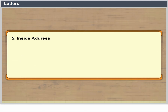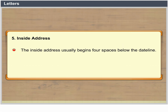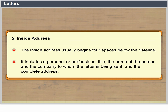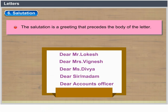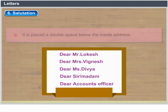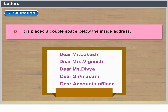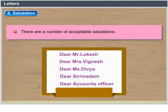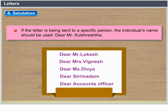Inside address: The inside address usually begins four spaces below the date line. It includes a personal or professional title, the name of the person and the company to whom the letter is being sent, and the complete address. Salutation: The salutation is a greeting that precedes the body of the letter. It is placed a double space below the inside address. There are a number of acceptable salutations — if the letter is being sent to a specific person, the individual's name should be used, e.g., 'Dear Mr. Kulakshatra.'